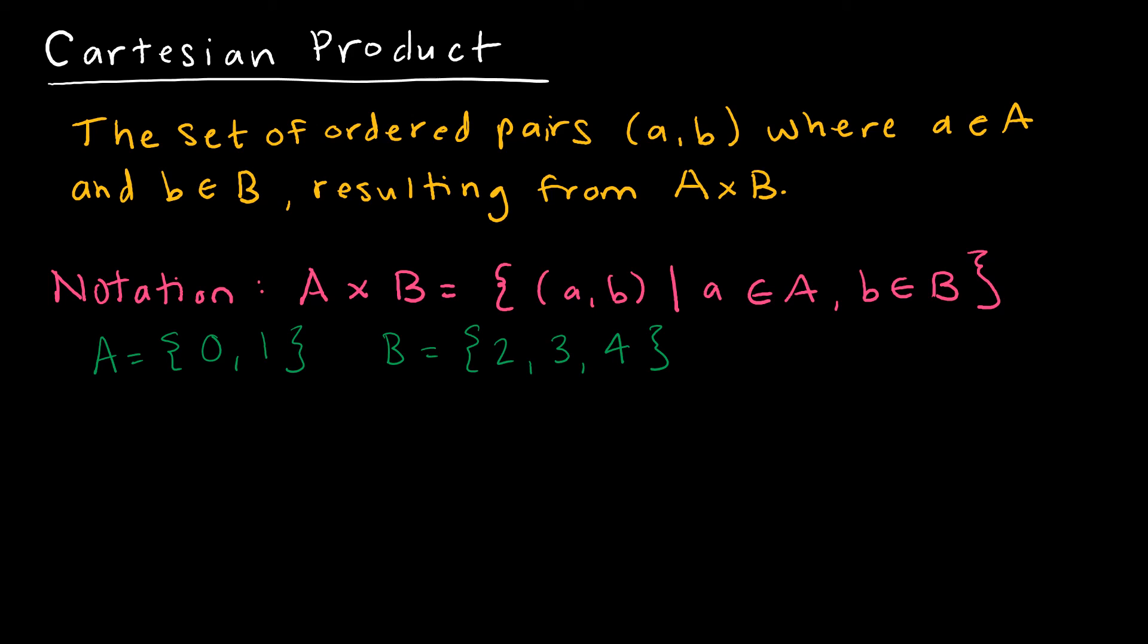What a Cartesian product tells us to do is it's going to be all of the ordered pairs that I can create using one element of A and one element of B. So I could have 0, 2, I could have 0, 3, 0, 4, or I could have 1, 2, 1, 3, 1, 4. So again, each time I used a value from set A and an element from set B, and I've done all of the different combinations.